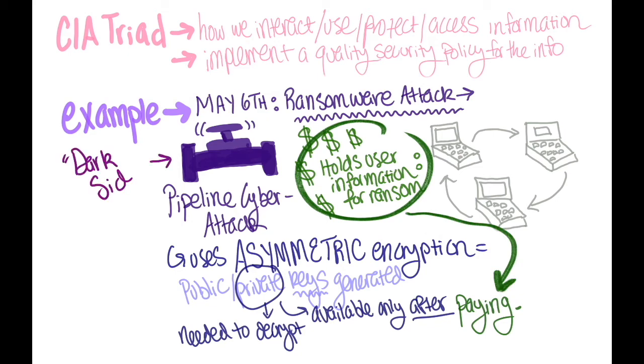For the recent pipeline attack, dark side ransomware was specifically responsible for compromising Colonial Pipeline's operations, hacking into the company's networks, encrypting their files to deny Colonial Pipeline access, and extorting the company with a roughly $5 million Bitcoin payment to restore service.